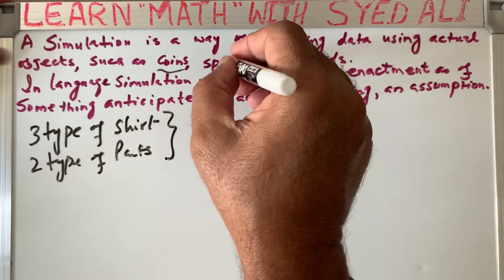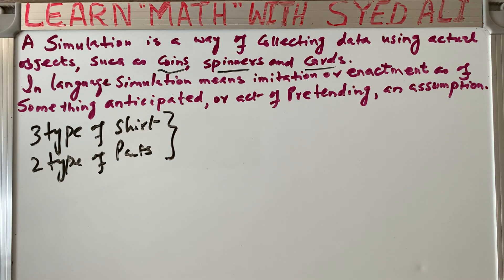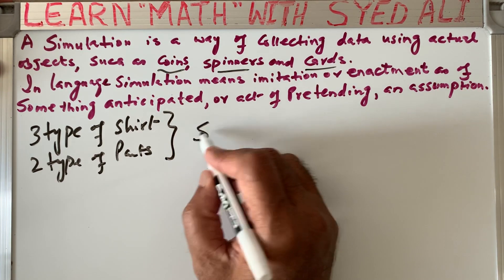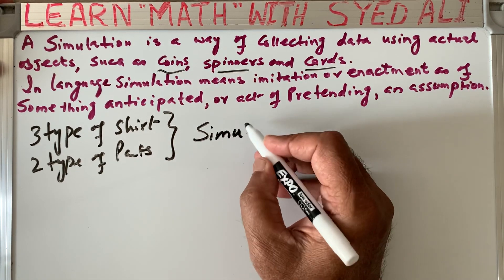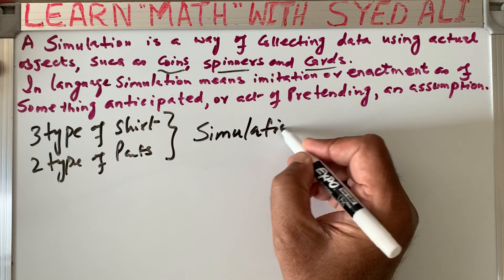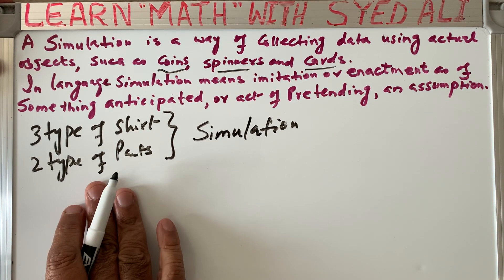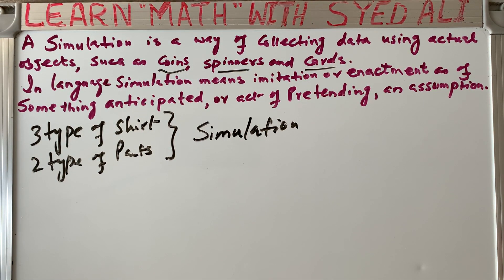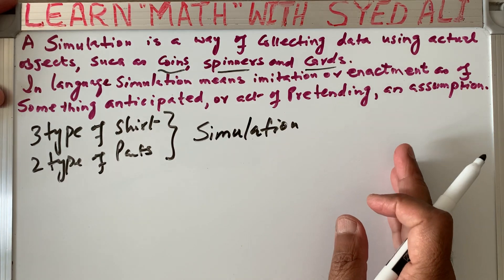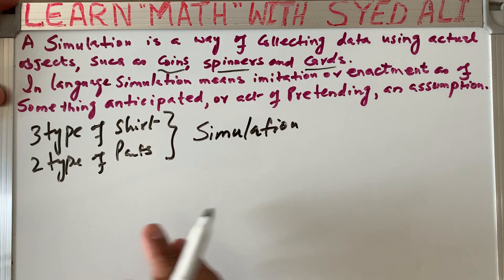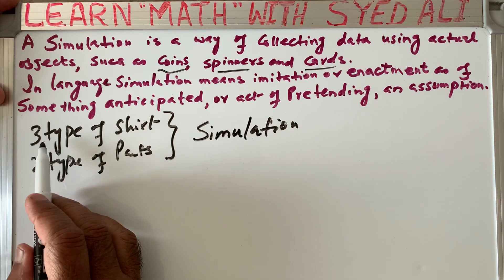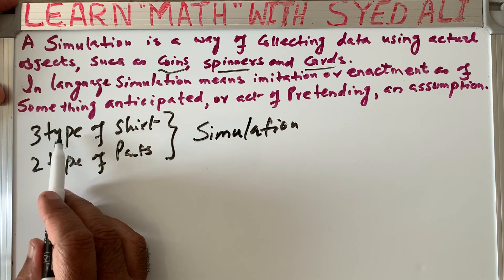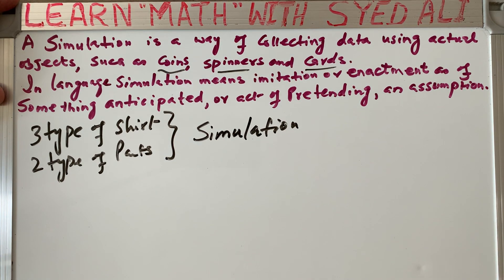Can we simulate this situation with something — using a coin, spinner, head or cards, or some actual object? We can simulate this situation because we know it from our last video. We have to pretend or assume that one thing equals or can be simulated as another. The situation had 3 types of shirts and 2 types of pants, with a total of 6 outcomes.